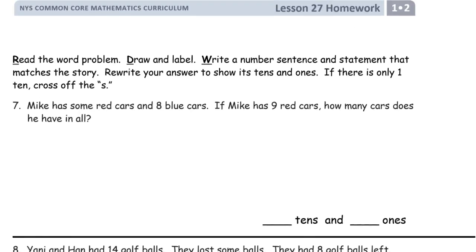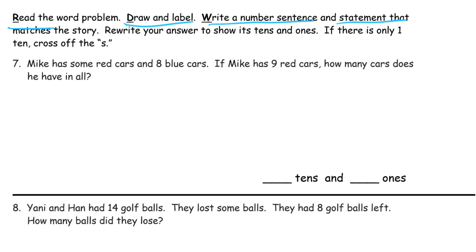Now we're going to do some RDW. Read, draw and label, write a number sentence and a statement that matches the story. And we'll rewrite our answer to show its tens and ones. And if there's only one 10, we cross out the S. Mike has some red cars and 8 blue cars. If Mike has 9 red cars, how many cars does he have in all? So he has red cars and blue cars. So there's 8 blue cars. 1, 2, 3, 4, 5, 6, 7, 8. These are blue. B for blue.